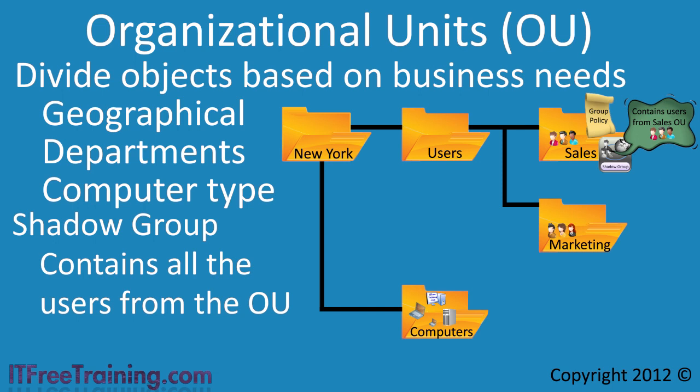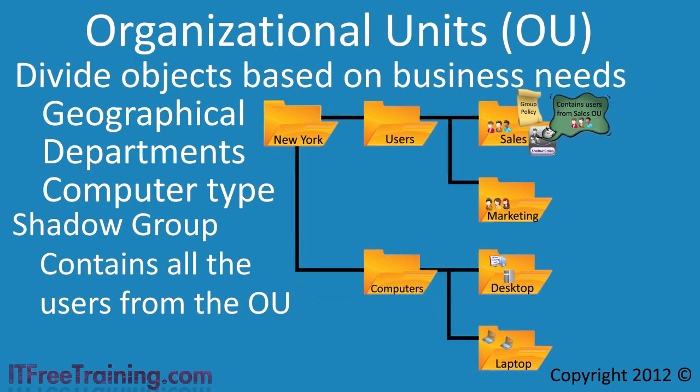OUs can also be used to separate computers. In this example I could create separate OUs for desktop and laptop computers. This comes in handy for using Group Policy. You could create a Group Policy for computers that contains all the common settings, like the desktop wallpaper and screen saver. Next, you could create separate laptop and desktop group policies which contain settings that are just for those types of computers. Both of these OUs could also have Group Policy applied to them that configured settings specific to desktops and laptops.